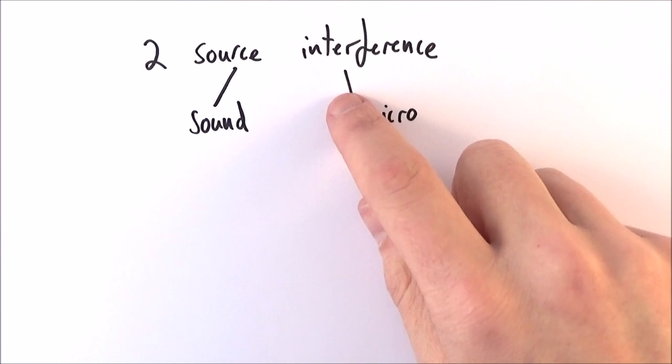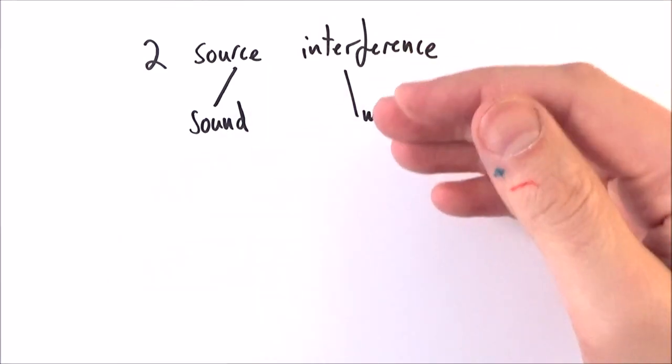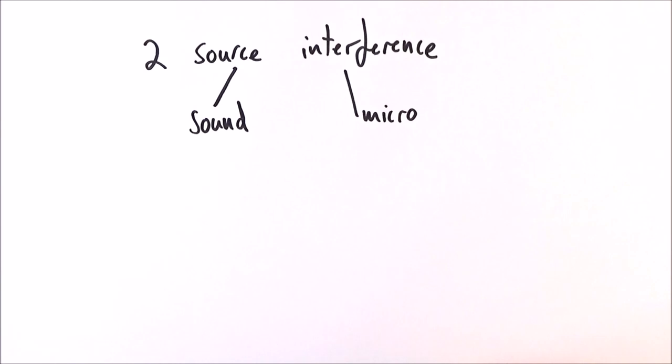So far we've looked at two sources of interference both with sound waves where you might hear loud and quiet points and also using microwaves that we can demonstrate in the lab.